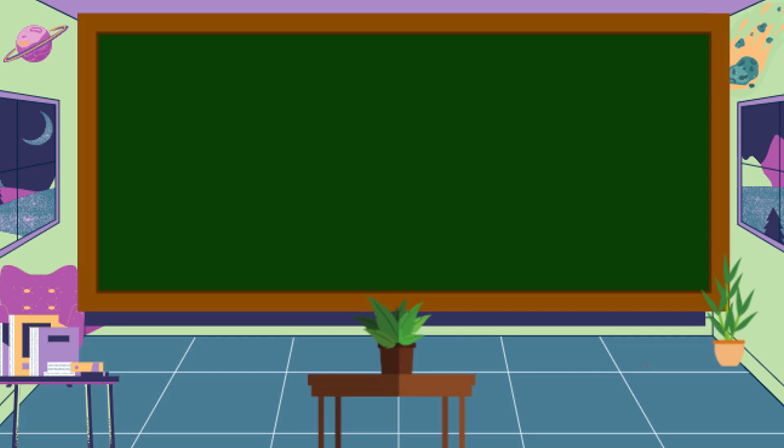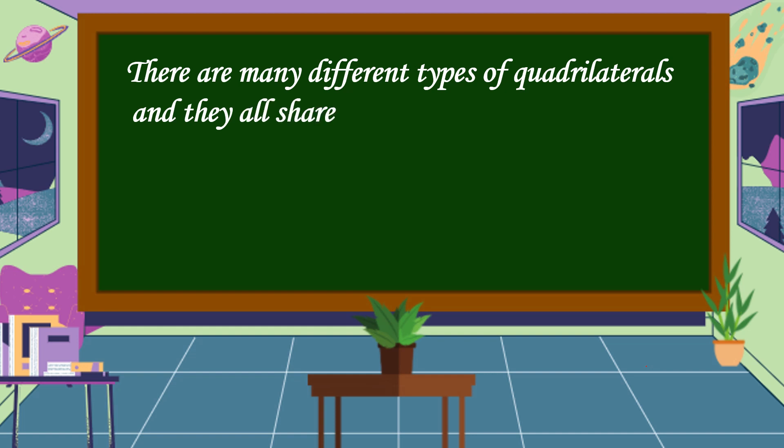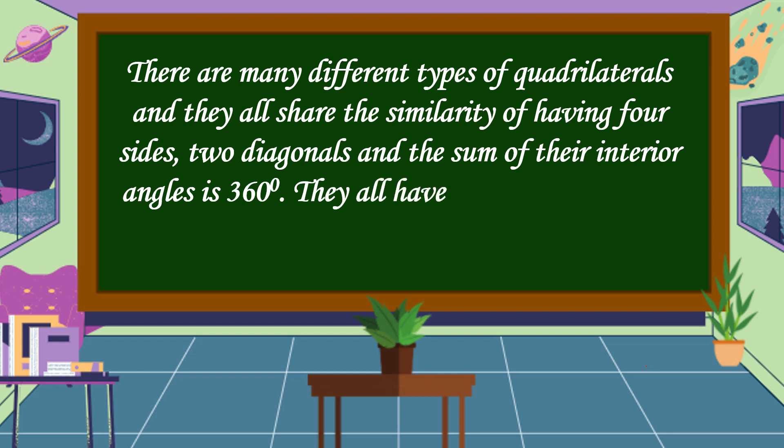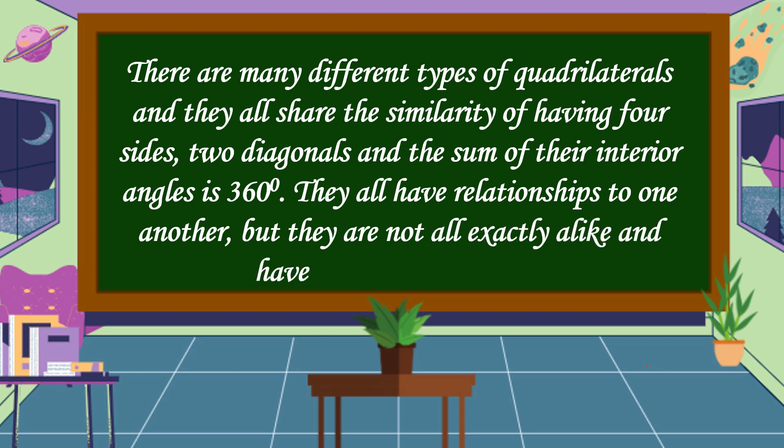Next, we're going to discuss the relationship between one quadrilateral to another quadrilateral. There are many different types of quadrilaterals, and they all share the similarity of having four sides, two diagonals, and the sum of their interior angles is 360 degrees. They all have relationships to one another, but they are not all exactly alike and have different properties.